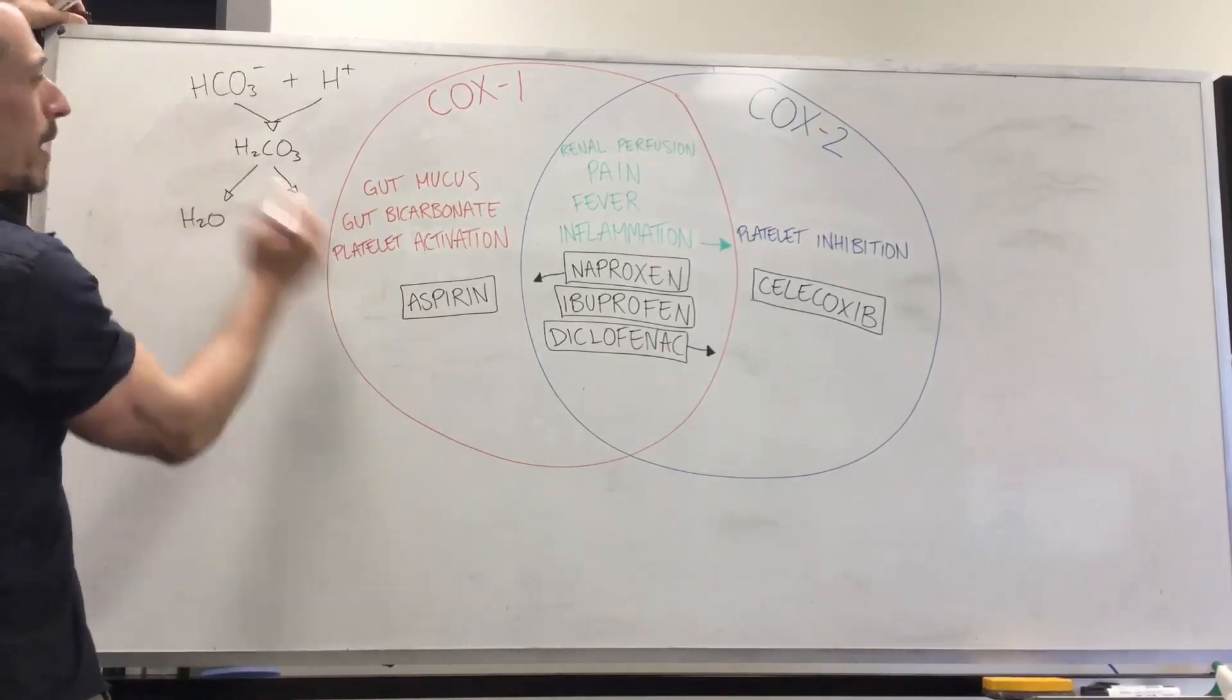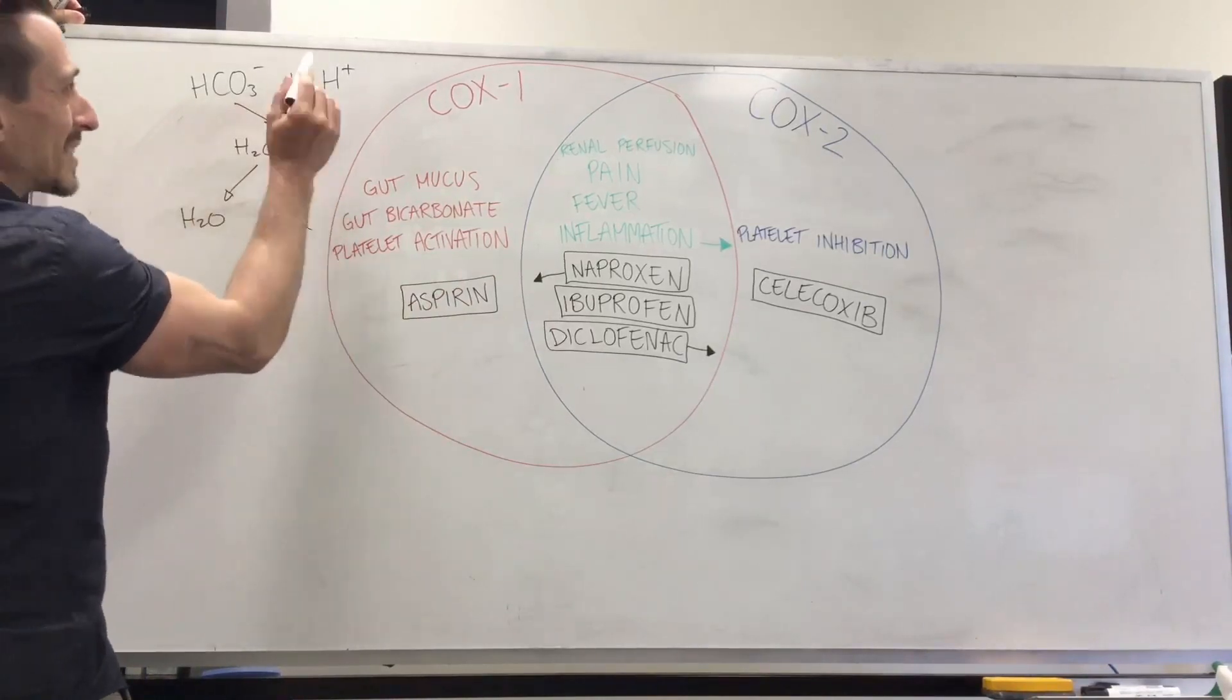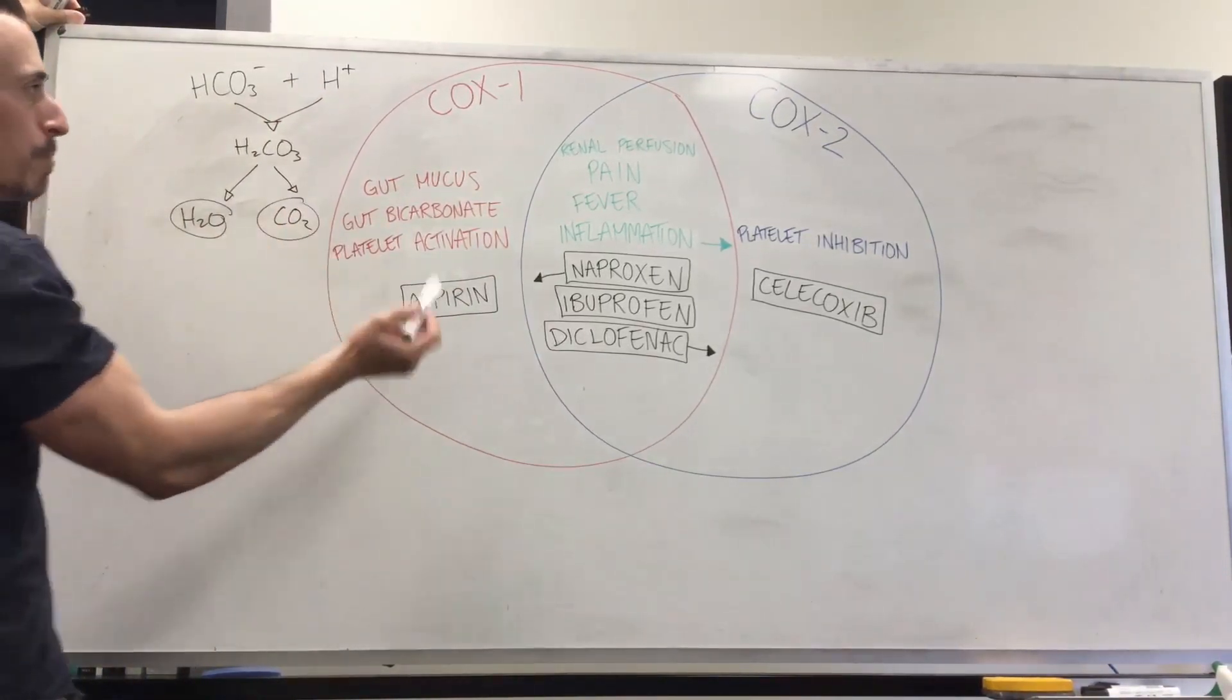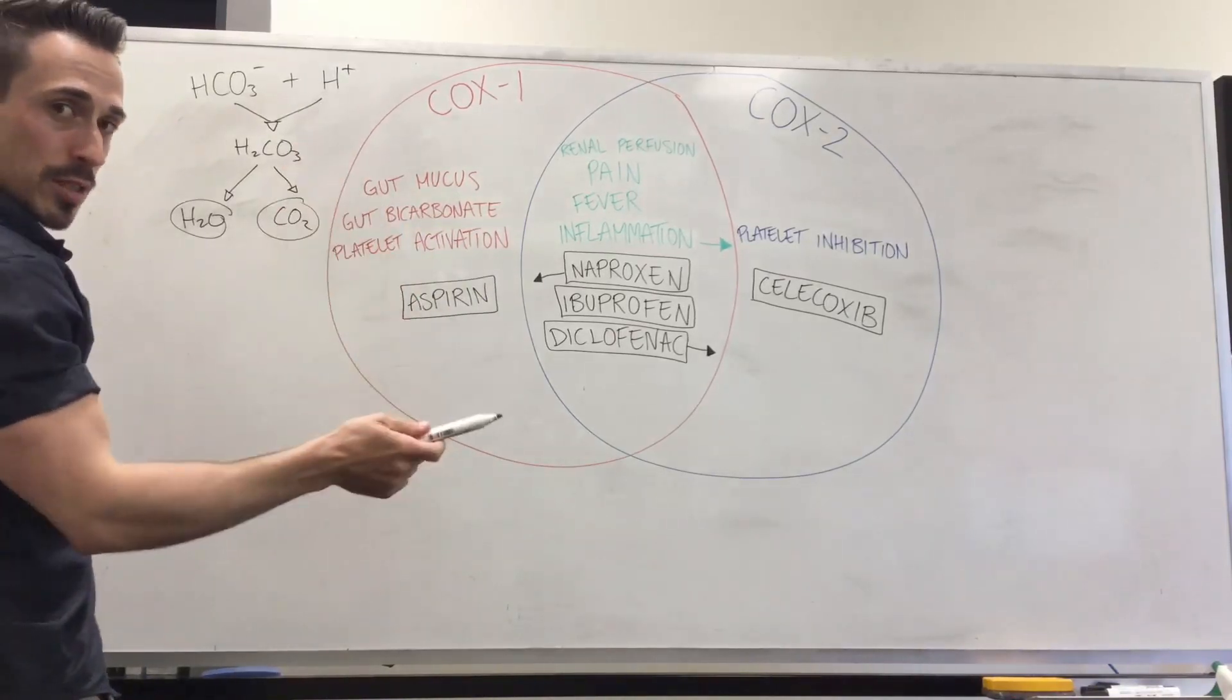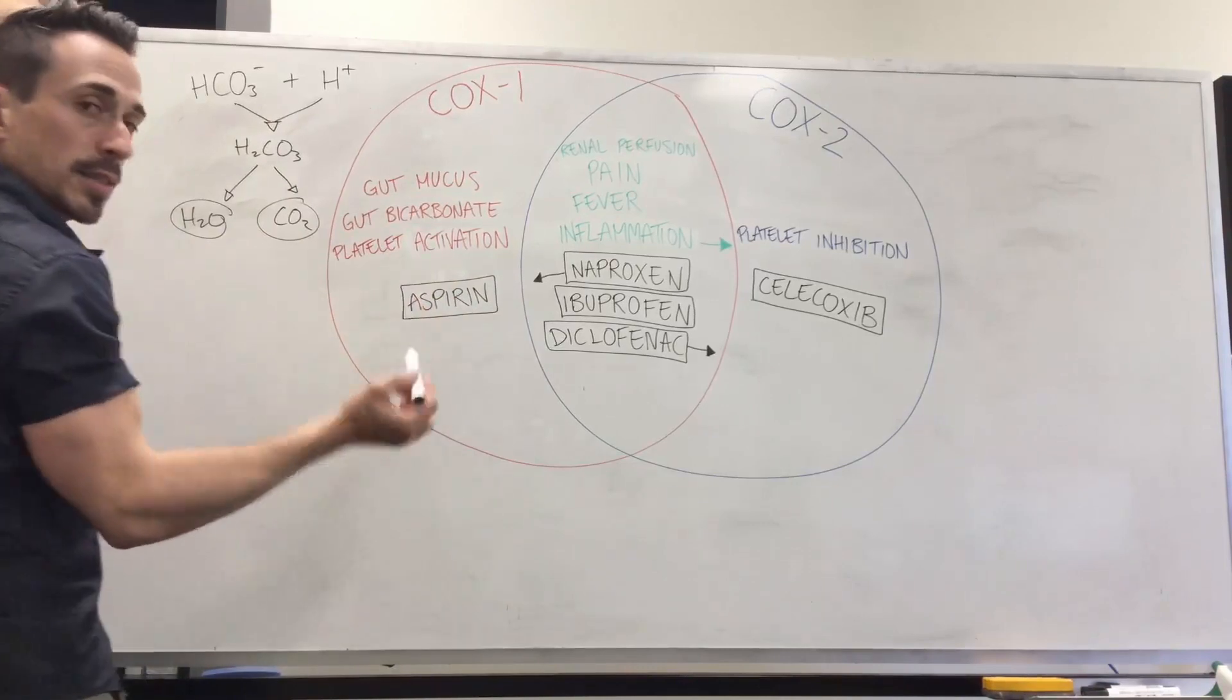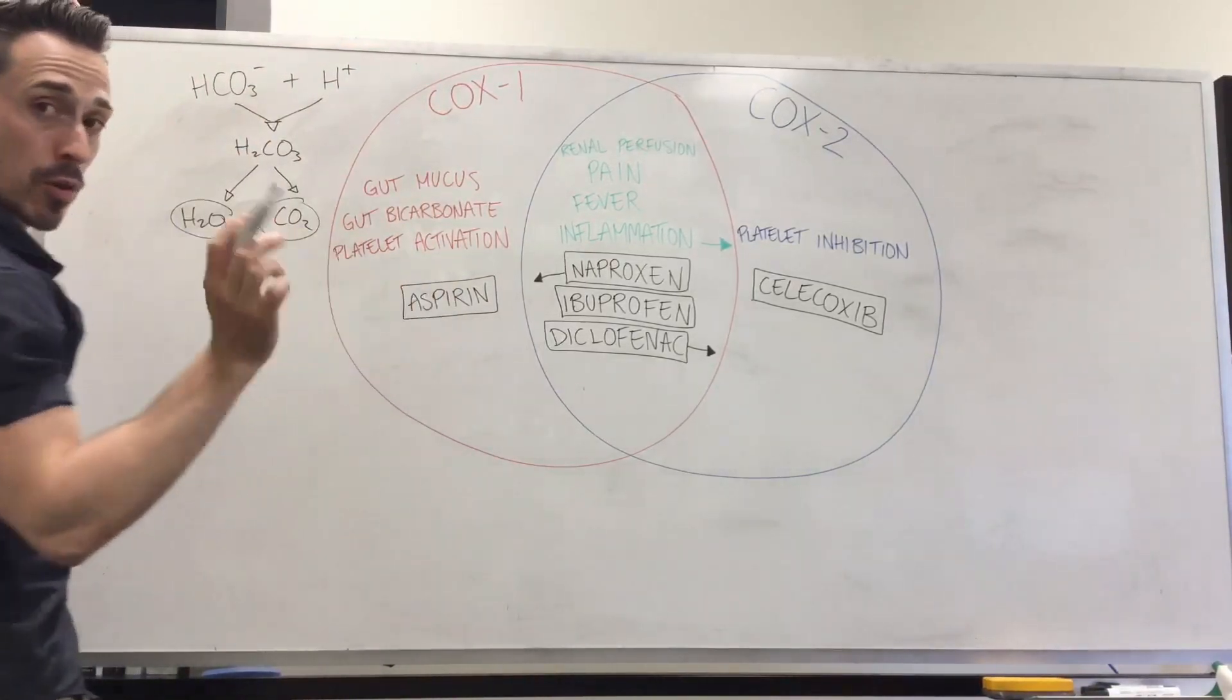So effectively, when bicarbonate produced by these prostaglandins comes across acid in the stomach, it neutralizes it into water and carbon dioxide. So both the prostaglandins produced by COX-1 help protect the stomach by making mucus and bicarbonate. Now in addition to that, COX-1 enzyme is really important in activating platelets. This means COX-1 plays an important role in blood clotting.